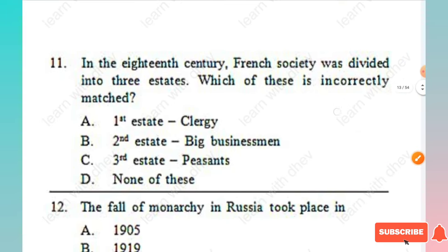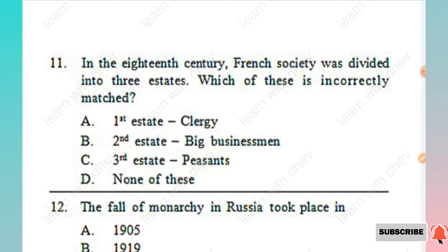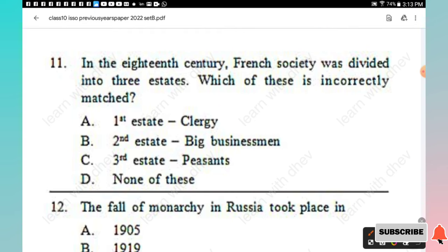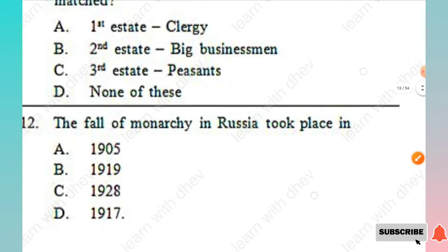Question 11: In 18th century French society, divided into three estates, which of these is incorrectly matched? First Estate — clergy, Second Estate — big businessmen, Third Estate — peasants, Option D — none of these. The incorrectly matched one is Option B, Second Estate to big businessmen.